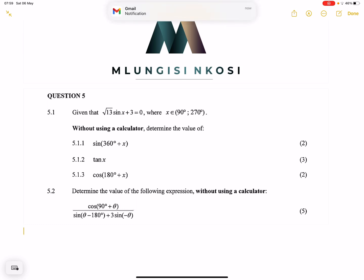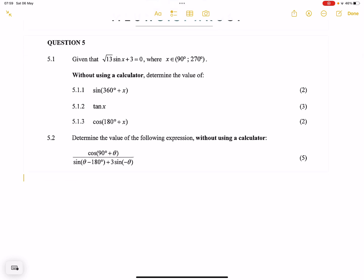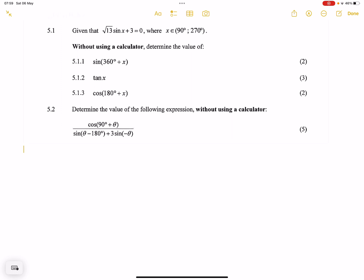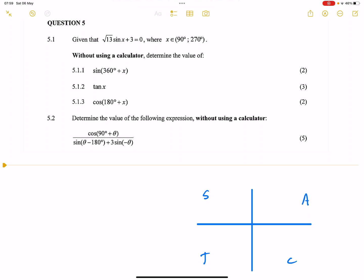In this case, we're given √13 sin(x) + 3 = 0, and they tell us x is located between 90° and 270°. So how we deal with these, we're going to have our CAST diagram. You remember the different trigonometric ratios or functions are positive at different points.